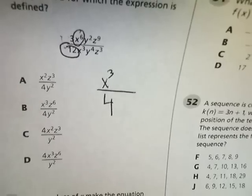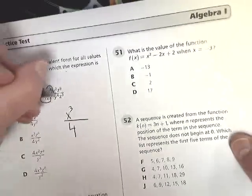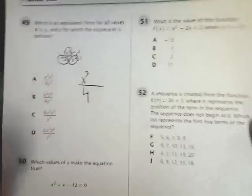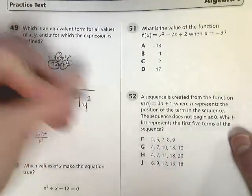Then I'm going to look at my y's. I've got y to the fourth and y to the second. Well, y to the fourth is bigger, so my y term is going to stay on the bottom. And 4 minus 2 is 2, so 4y to the second power.